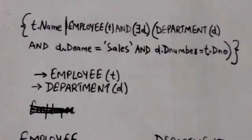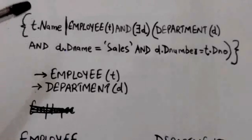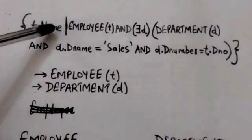This tuple relational calculus query: only those tuples in the tuple relational calculus expression should be those that appear to the left side of the bar.